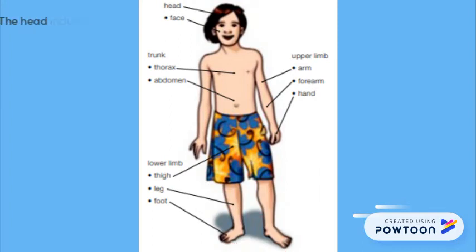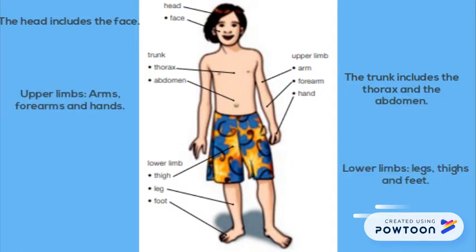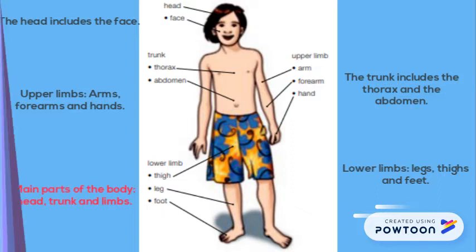The head includes the face. The trunk includes the thorax and the abdomen. Upper limbs: arms, forearms and hands. And lower limbs: legs, thighs and feet. Remember, the main parts of the body are head, trunk and limbs.